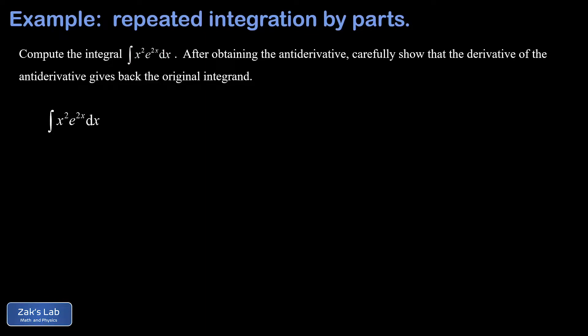In this video, we're computing the integral of x squared e to the 2x. This is an integration by parts integral where we have to repeatedly apply integration by parts before we get our final answer. The strategy is to continue to knock down the power of x squared until we eventually get a constant and we can wrap up the problem.